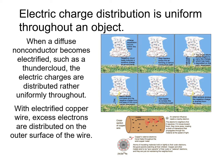Electric charge distribution is uniform throughout an object. In a thundercloud, the electrons are distributed rather uniformly throughout the cloud, which can create a bolt of lightning. With an electrified copper wire, the excess electrons are distributed on the outer surface of the wire — so the charge can diffuse through the object as in a cloud, or sit on the exterior as in a copper wire.